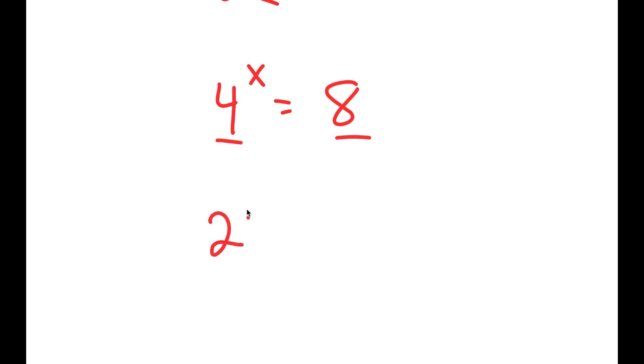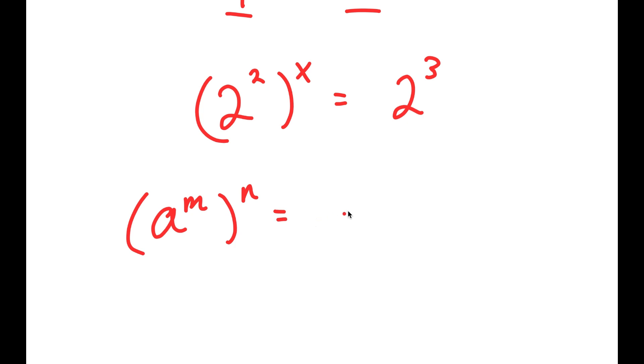So 4 is the same thing as 2 squared, and 8 is the same thing as 2 to the power of 3. And if I have something in the form a to the power of m to the power of n, this is equal to a to the power of m times n.